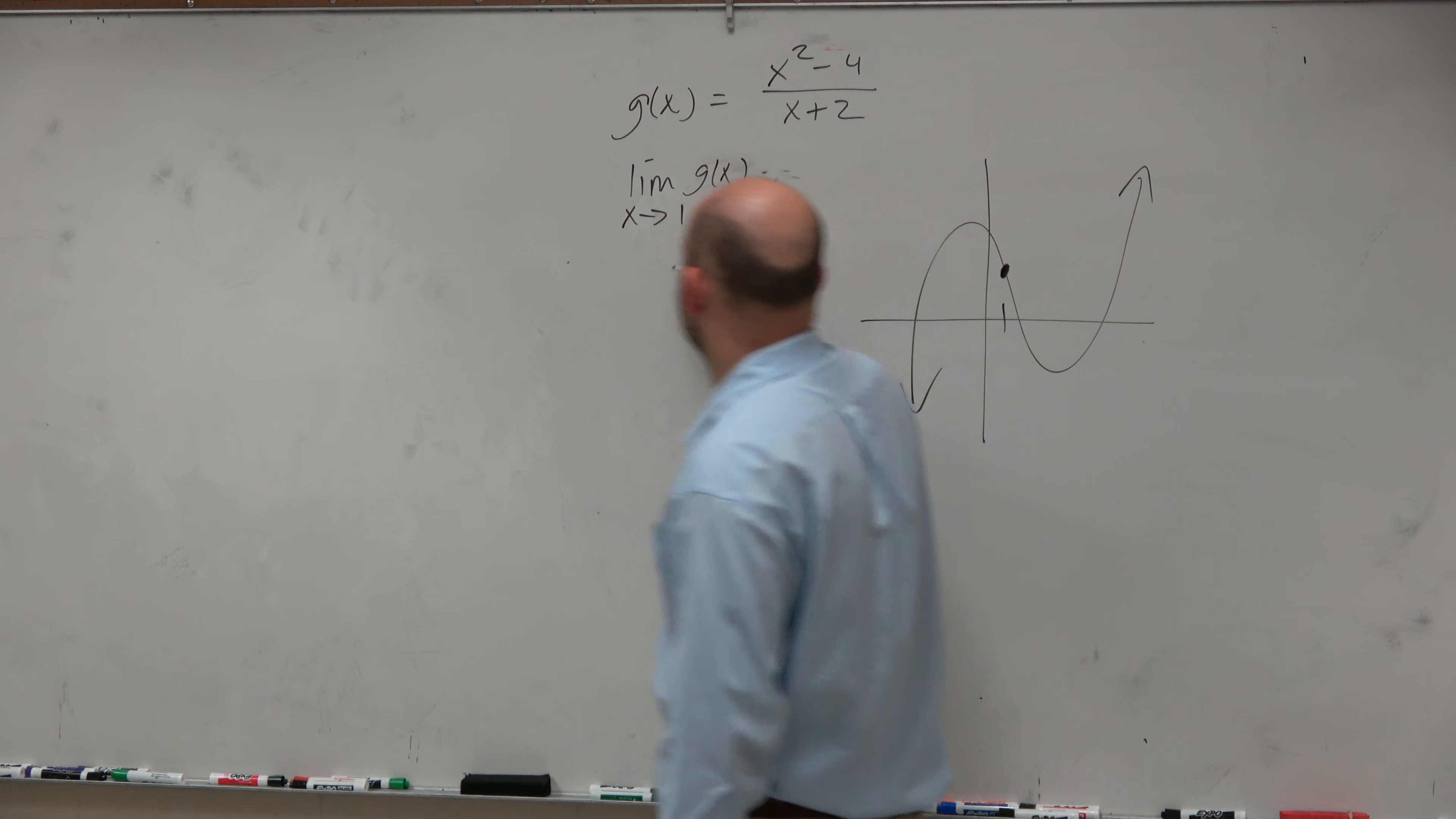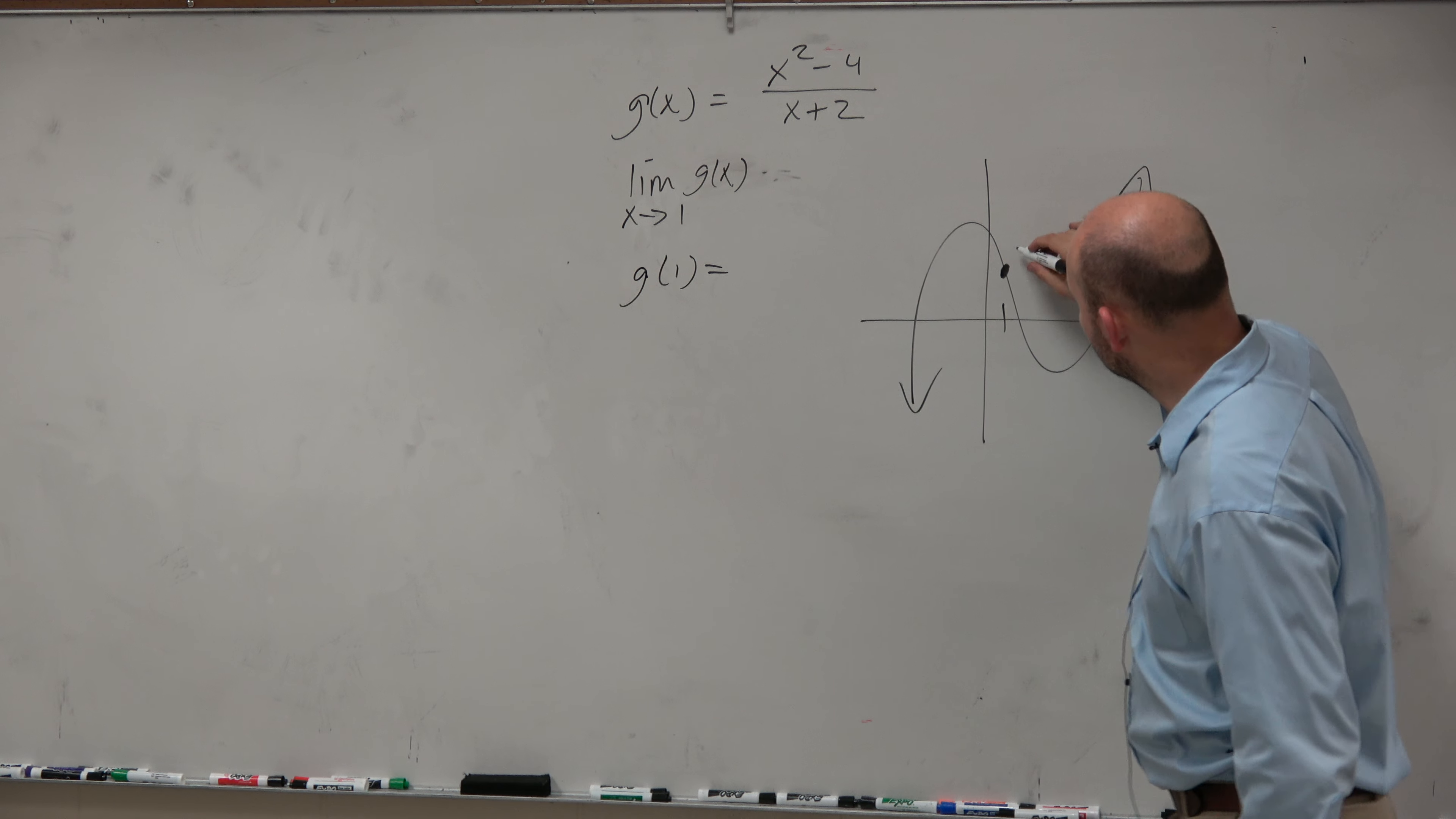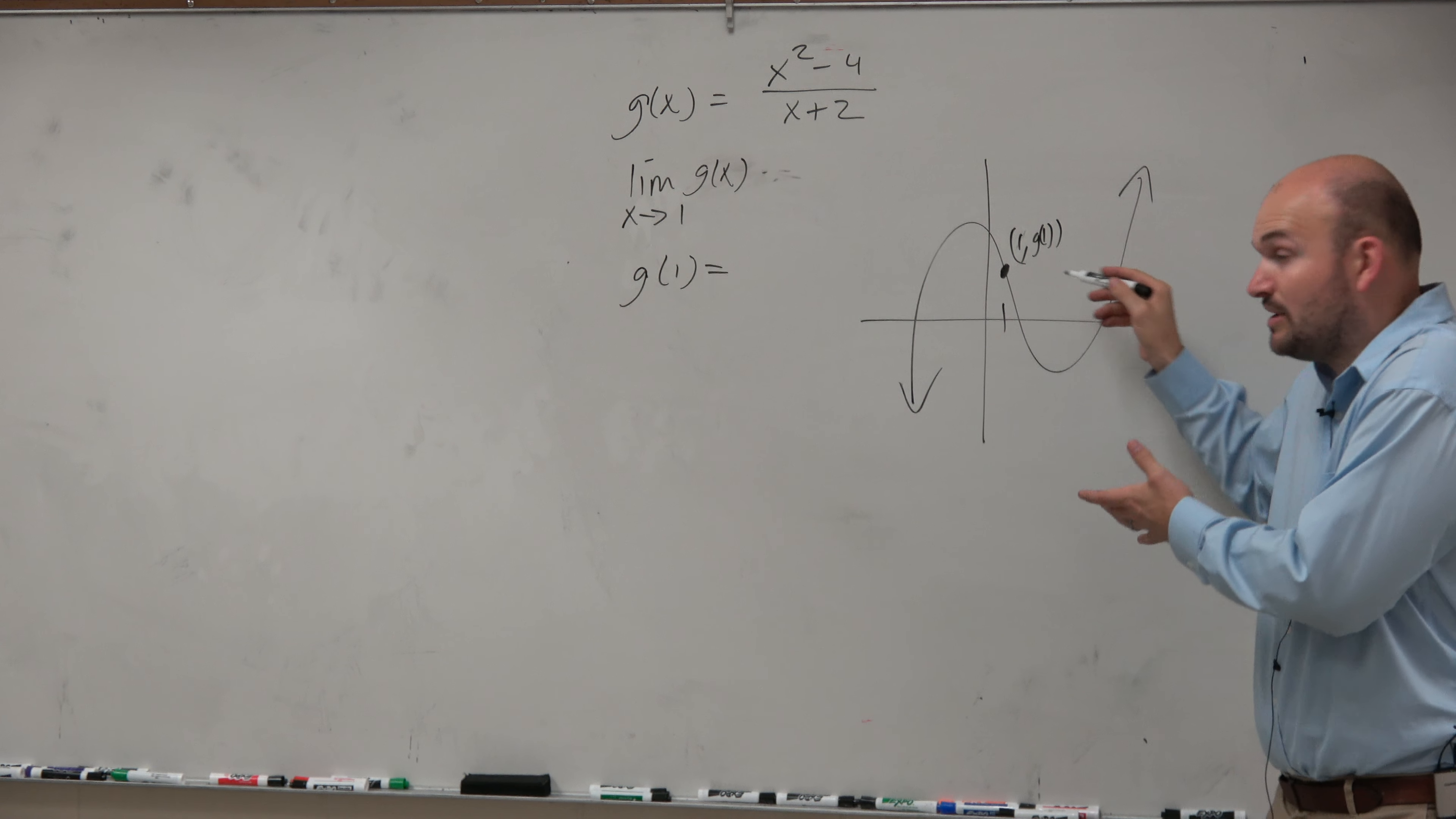You plug in g of 1, you're going to get some value. So you'd have 1 comma g of 1, whatever that value is. I know you guys can do the math in your head, but that's a coordinate point.